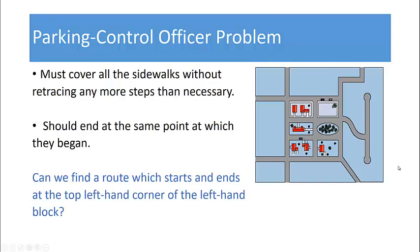So what do you think? Can we find a route which starts and ends at the top left-hand corner of the left-hand block that's going to cover all of the sidewalks exactly once? To answer this question we're going to use graph theory but first we need some definitions and terminology.